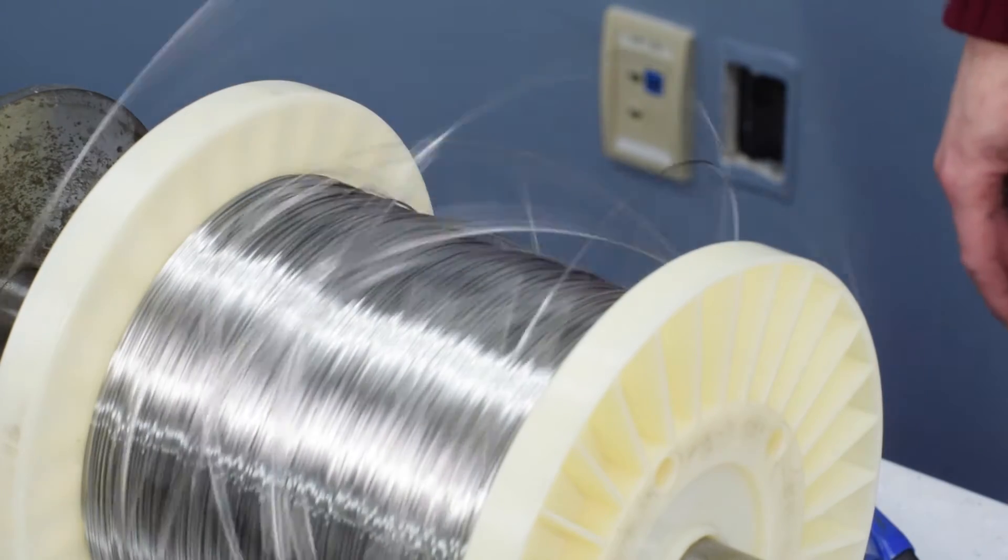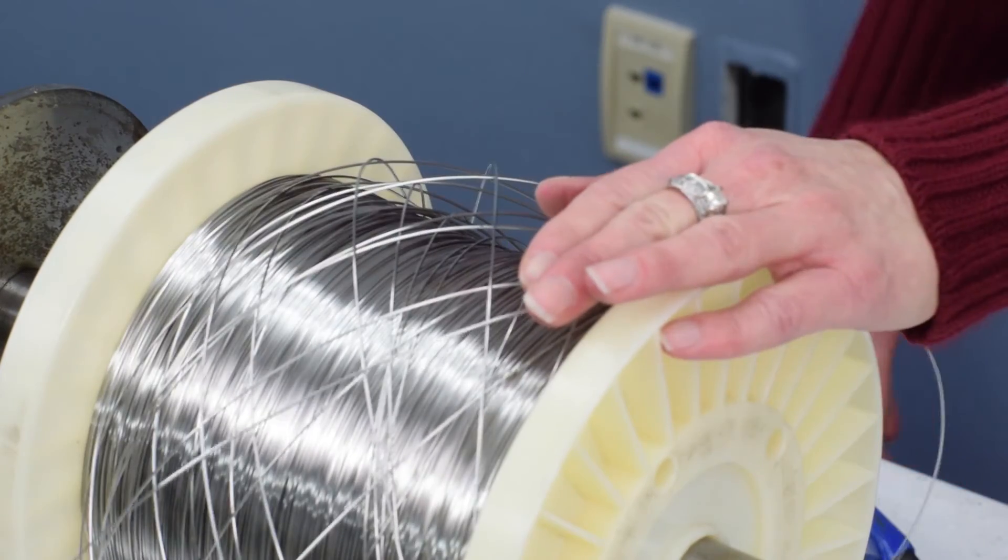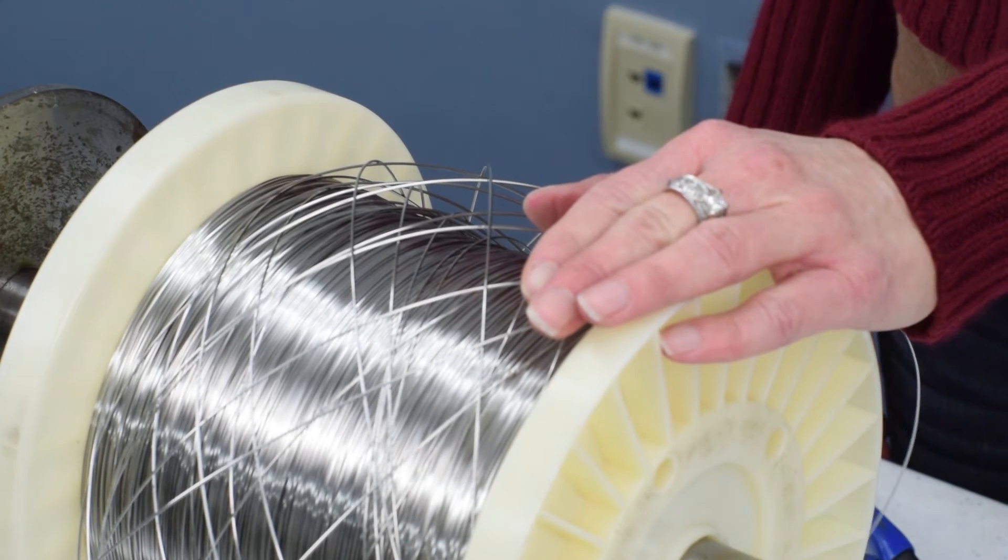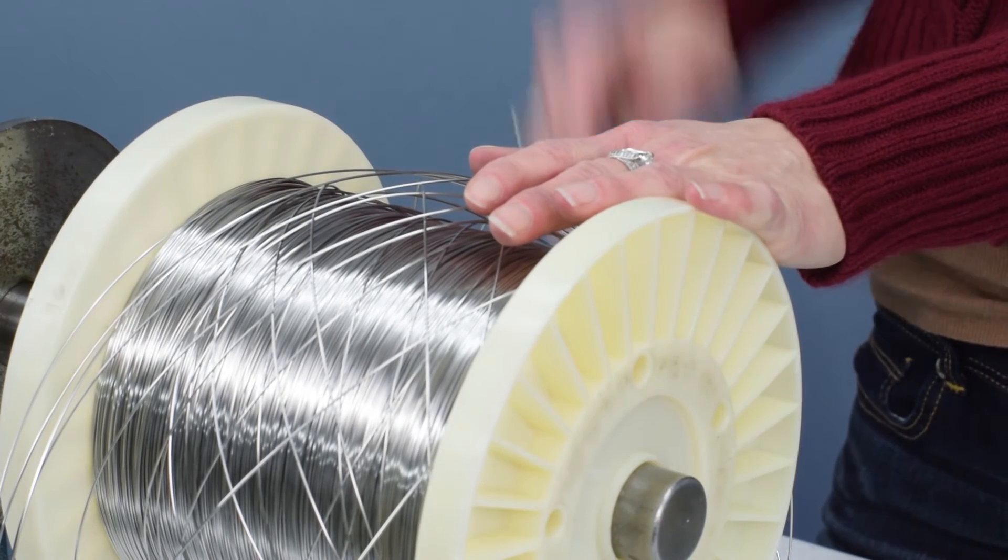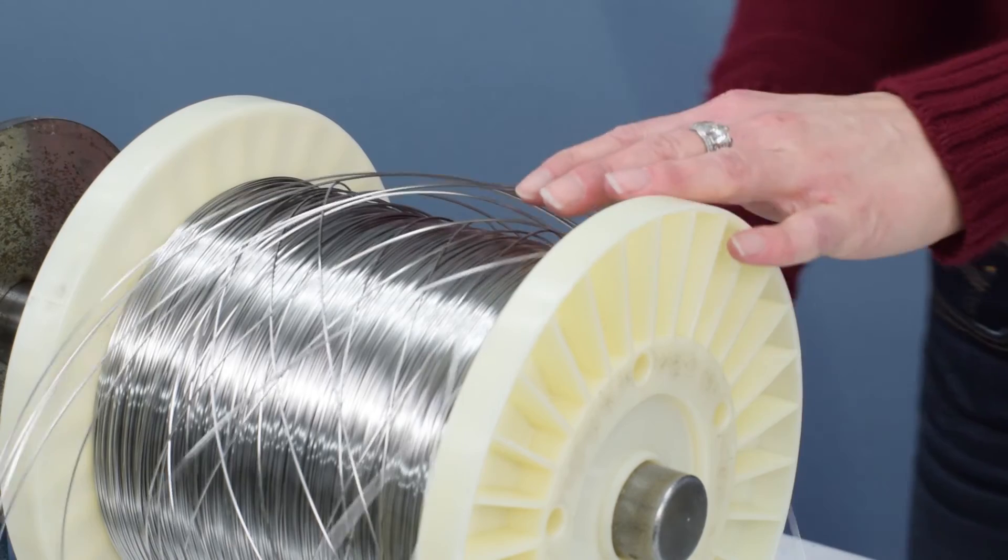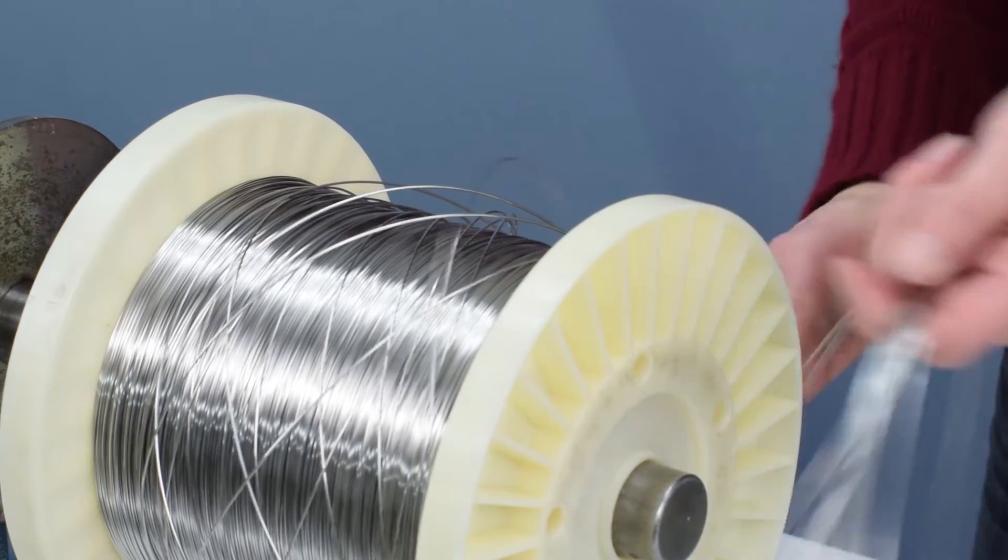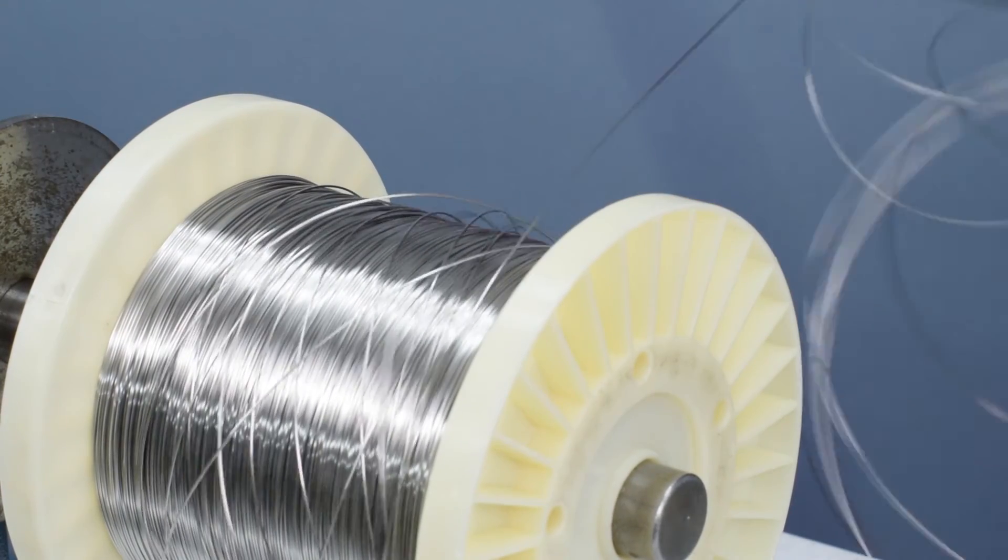If at any point you lose tension of your spooled wire, place your hand on the flange of the spool to prevent the wire from further unwinding. Once the wire is stopped, use your other hand to grab the top section of the wire and pull over the flange.